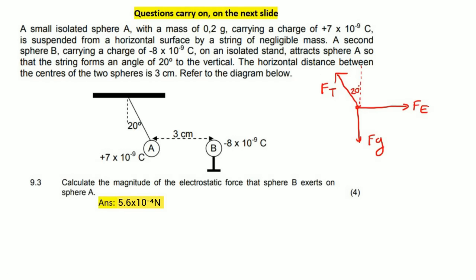So it says calculate the magnitude of the electrostatic force that B exerts on A. Now, this sometimes confuses learners. Because of our good old friend Newton, what he discovered was that in Newton's third law, the force of B on A or A on B is exactly the same. So they're actually just asking you to calculate the force between these two. Now, how do we do that? Well, we just use Coulomb's law, because that is the formula to calculate the force between two charges.